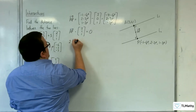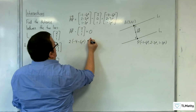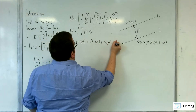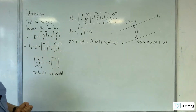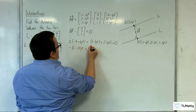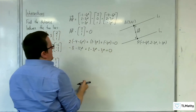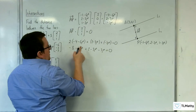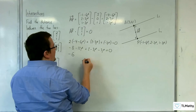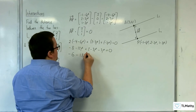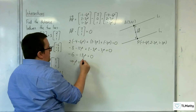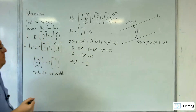So: 2 times (minus 4 minus 6mu) plus 1 times (2 minus 3mu) plus 1 times (minus 3mu) equals zero. Expanding: minus 8 minus 12mu plus 2 minus 3mu minus 3mu equals zero, giving minus 6 minus 18mu equals zero. Therefore mu equals minus 1 third.